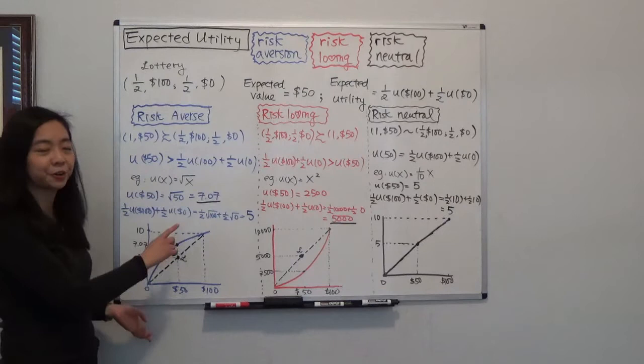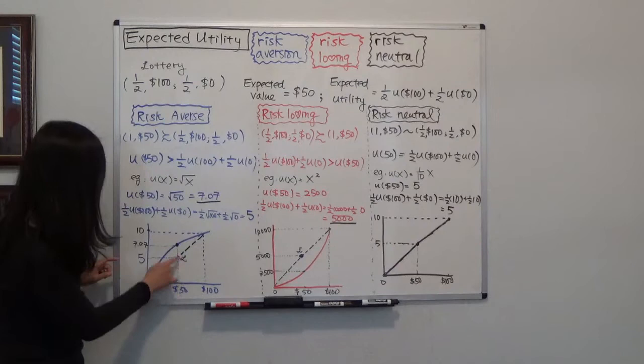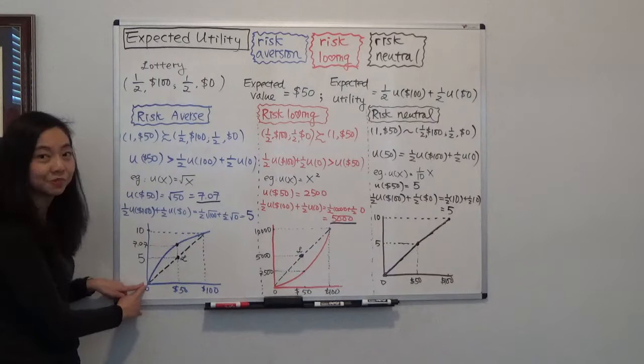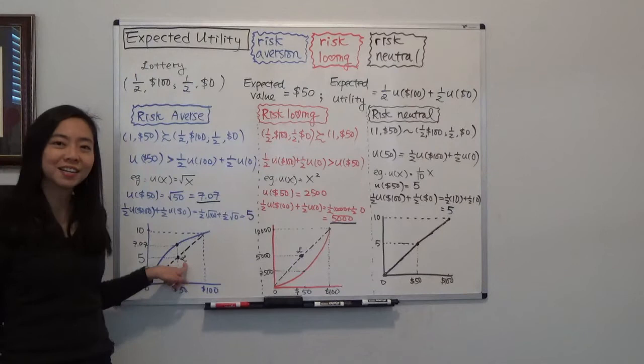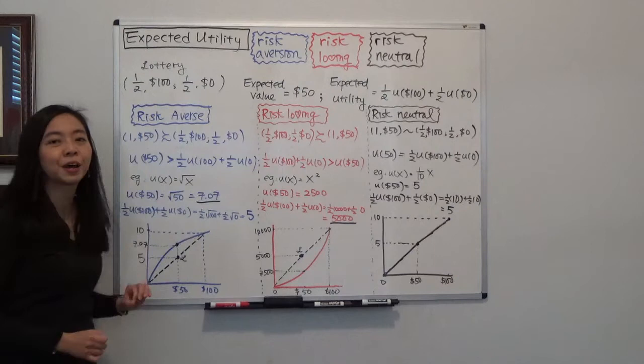If you draw the utility curve, you can see the utility function with $50 and $100 on the axis. Plugging $50 into the utility function gives you 7.07. The expected utility of the lottery — marked as L — is one half times 10 plus one half times 0, which gives you 5. Since 5 is less than 7.07, you choose to have $50 in your pocket for sure.